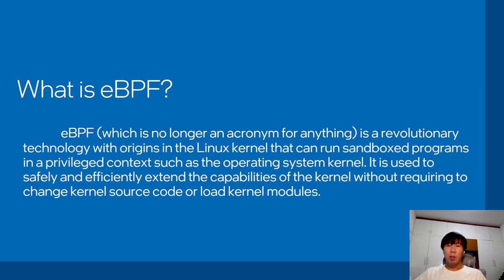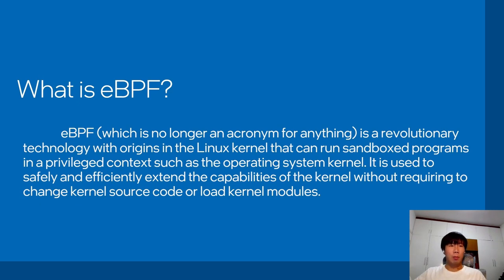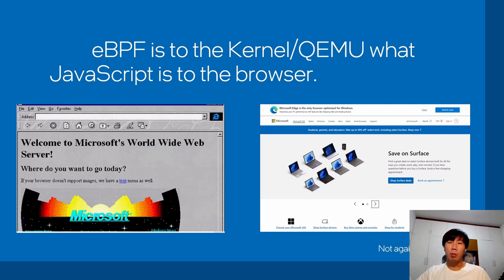A very common example is when a system call is happening: instead of the system call being performed automatically by the kernel, we can execute some code. This is a common example of how the system call tracepoint works. It is used to safely and efficiently extend the capabilities of the kernel without requiring changes to kernel source code or loading kernel modules. Someone said eBPF is to the kernel what JavaScript is to the browser.